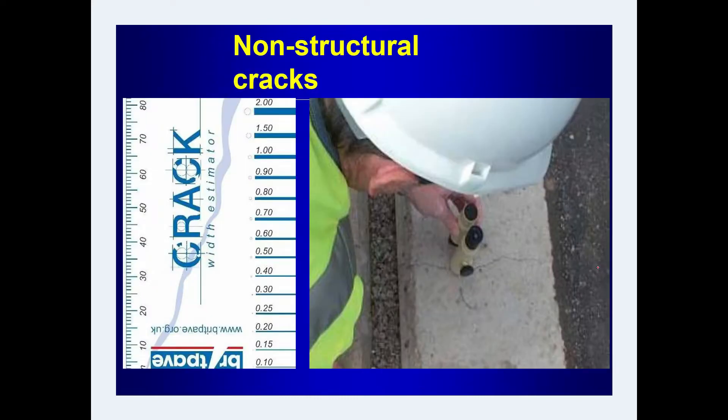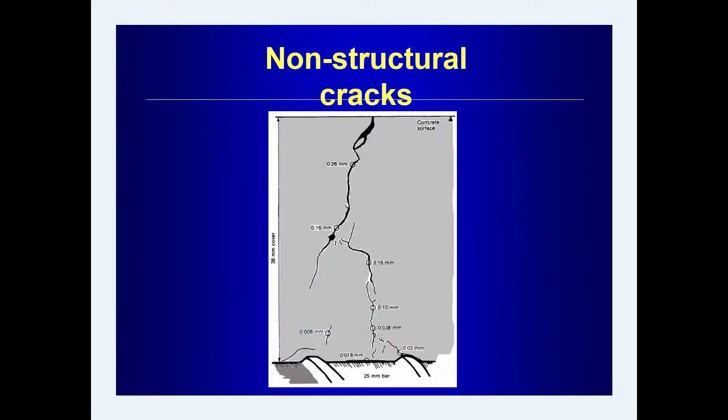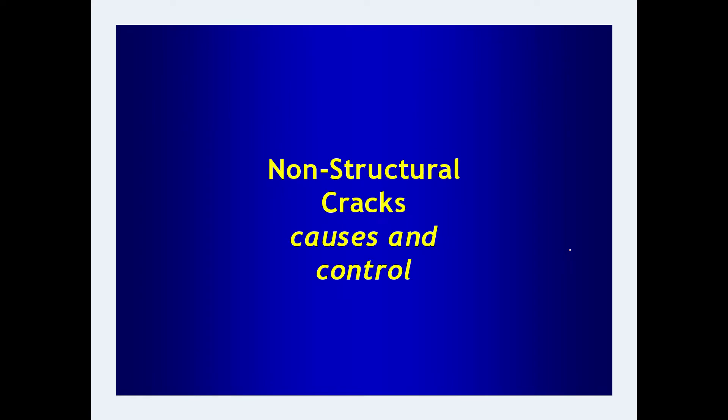Whenever cracks appear, it is first necessary to measure the crack width. In the picture you can see a crack appeared on a concrete surface and it is being measured. You can create a record of it. The crack width shown here is varying from 0.26 mm, with different values at different locations. We now look at non-structural cracks — their causes and how to control them.